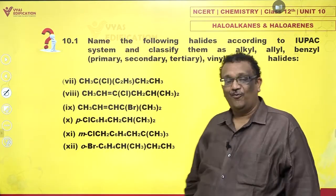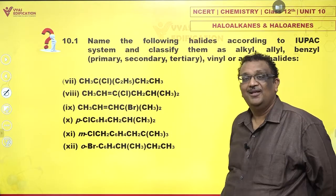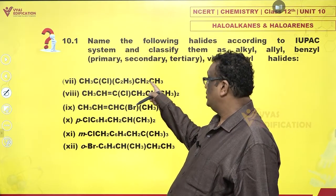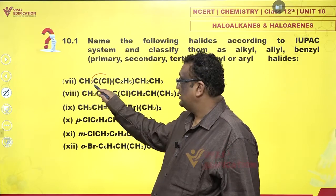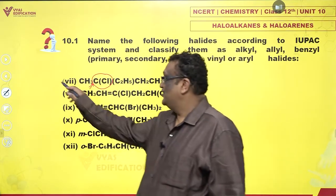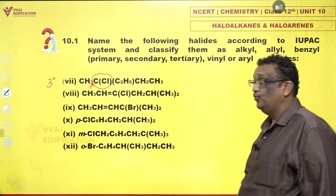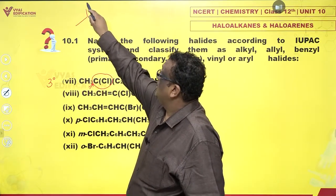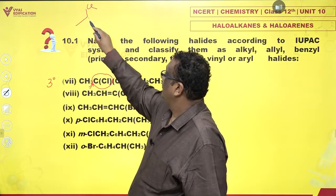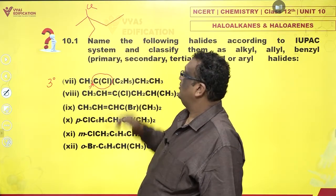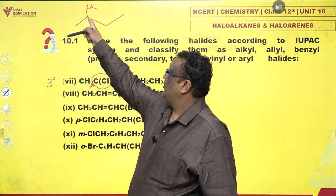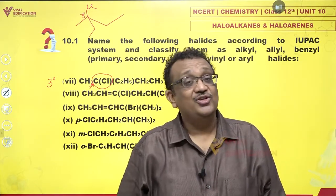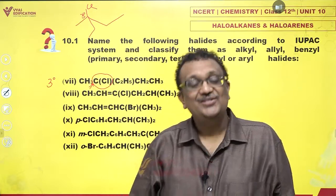There are more. Let us take a look at the seventh one: CH3-C(Cl)(C2H5)-CH2-CH3. This Cl is attached to a carbon which has no hydrogens. This is very likely tertiary. Drawing the bond line notation — this carbon is attached to one, two, and three other carbon atoms. This is a tertiary carbon, and the halogen attached to a tertiary carbon is a tertiary halide.